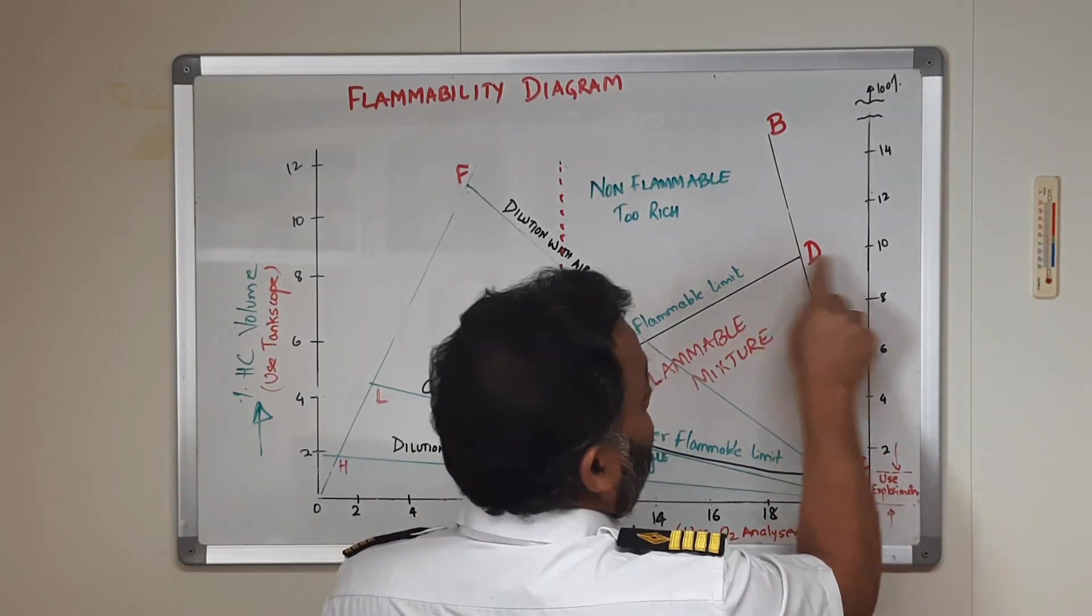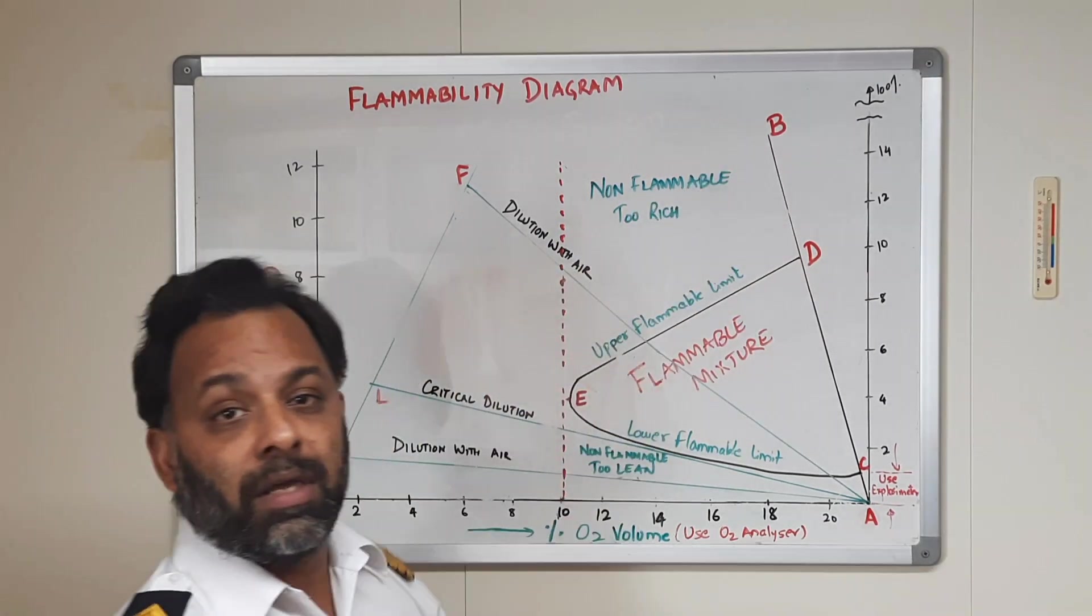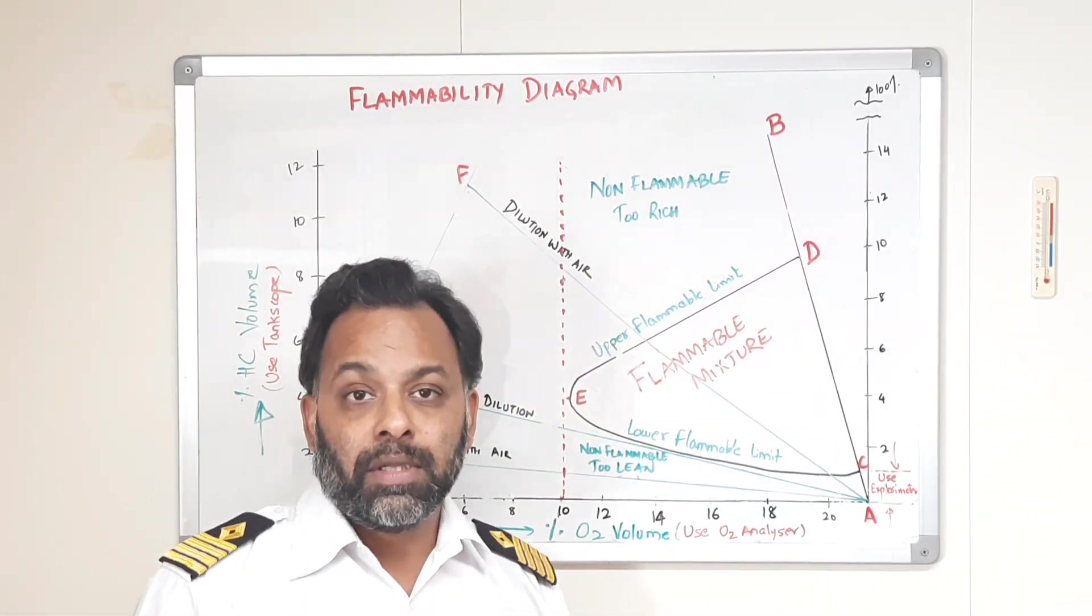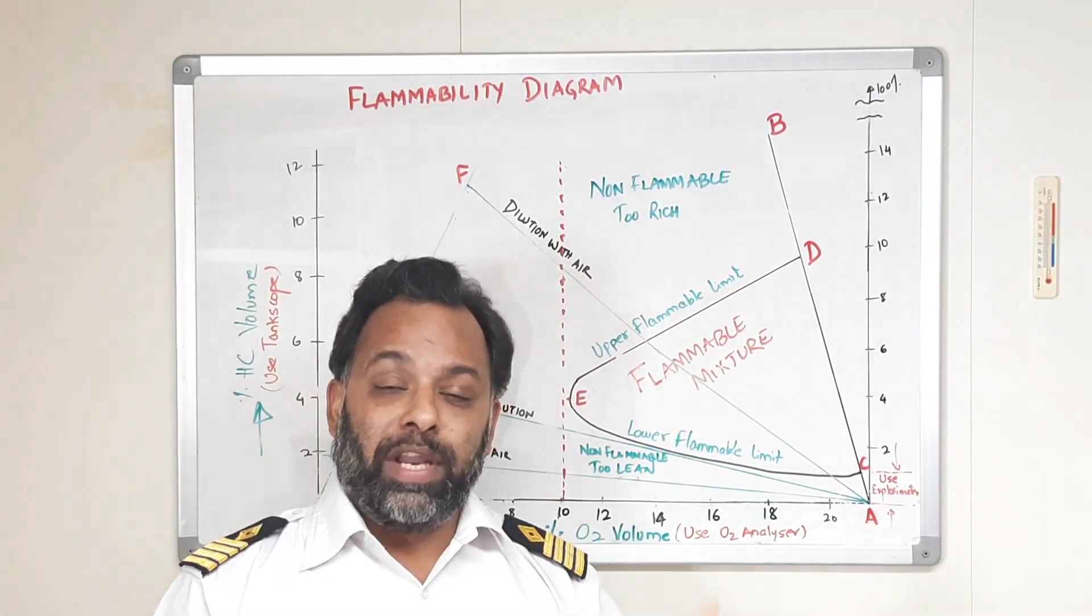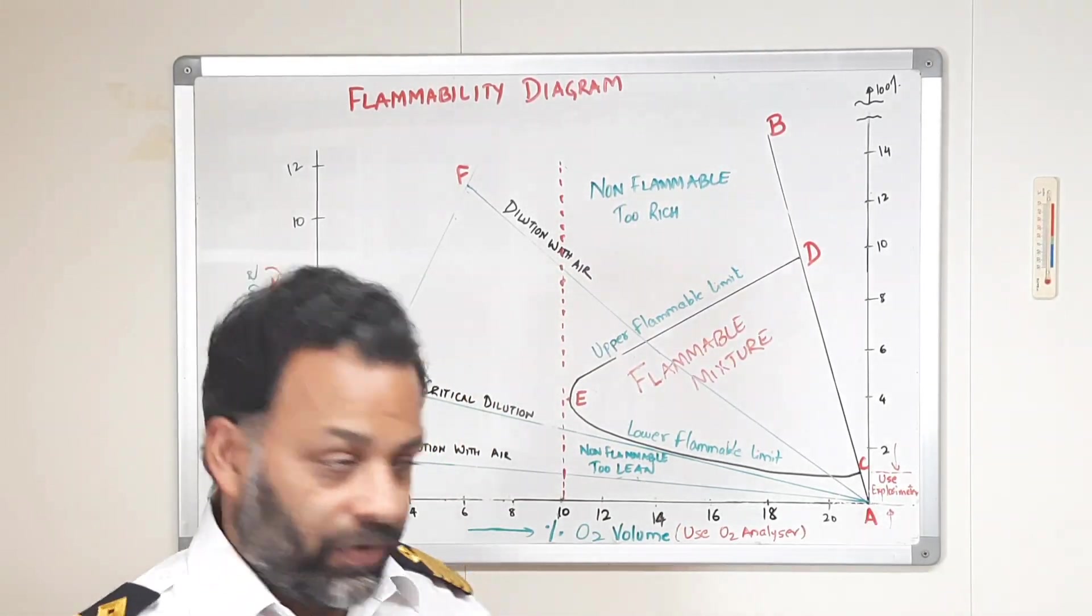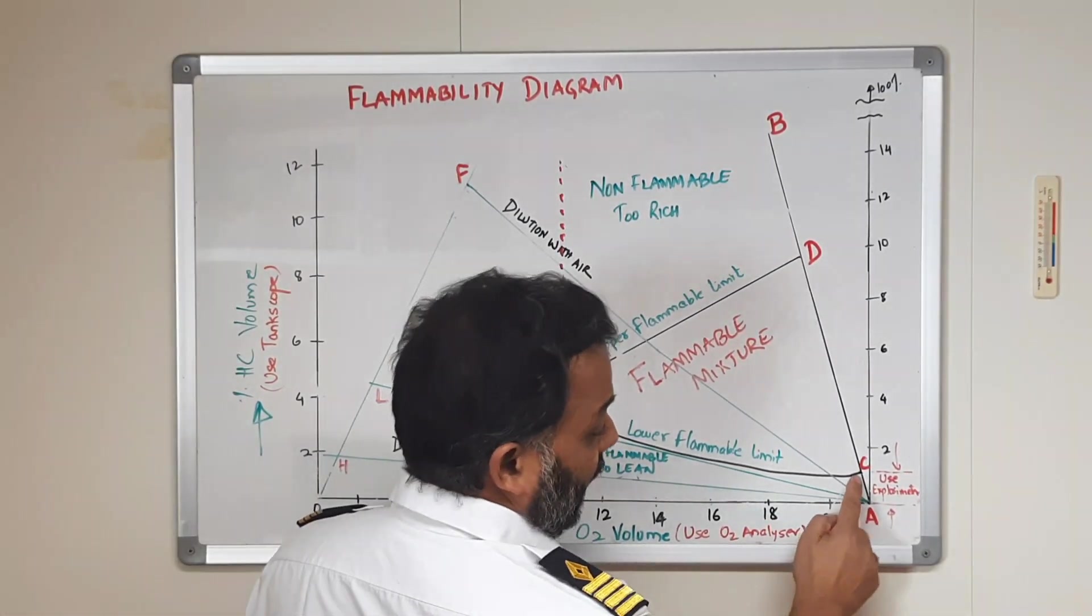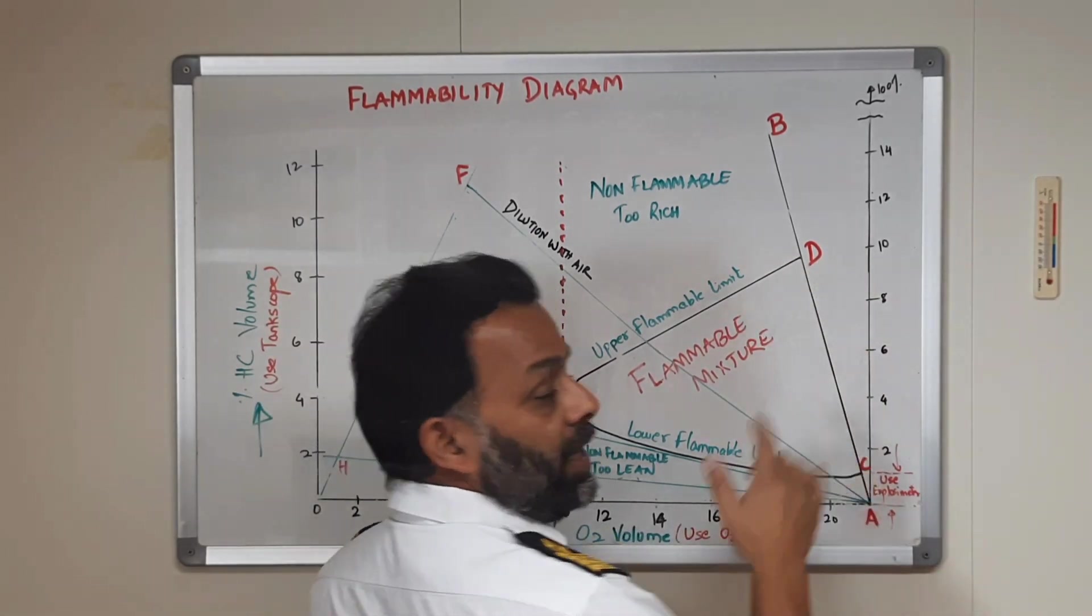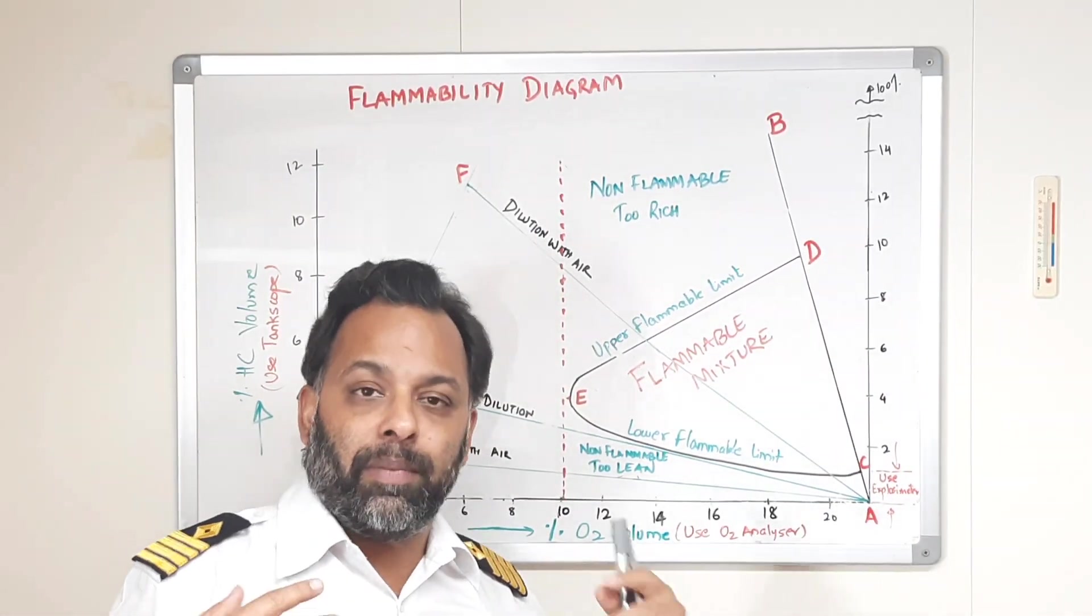Anything above 10% of hydrocarbon by volume, this mixture is too rich to fire. That means the amount of oxygen in this mixture is too less to sustain or to start a fire. Anything from point C to point D on this diagram is in the flammable range, explosive range, flammable region, flammable mixture known by different names.